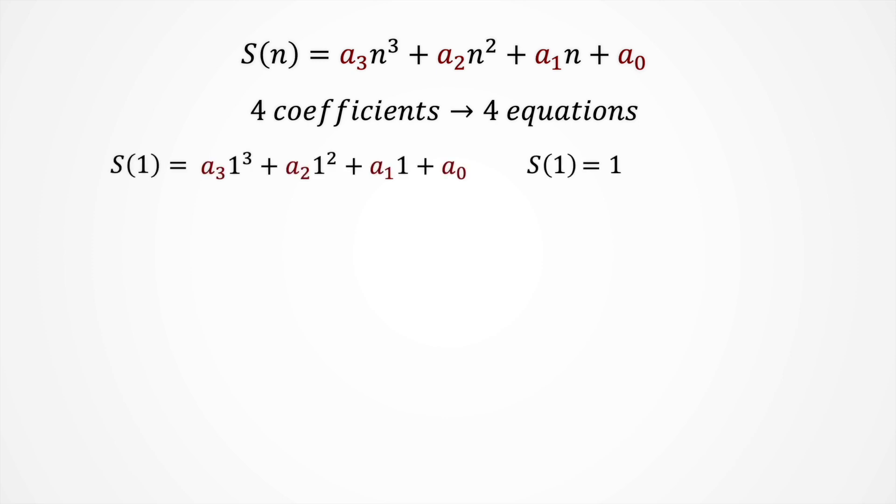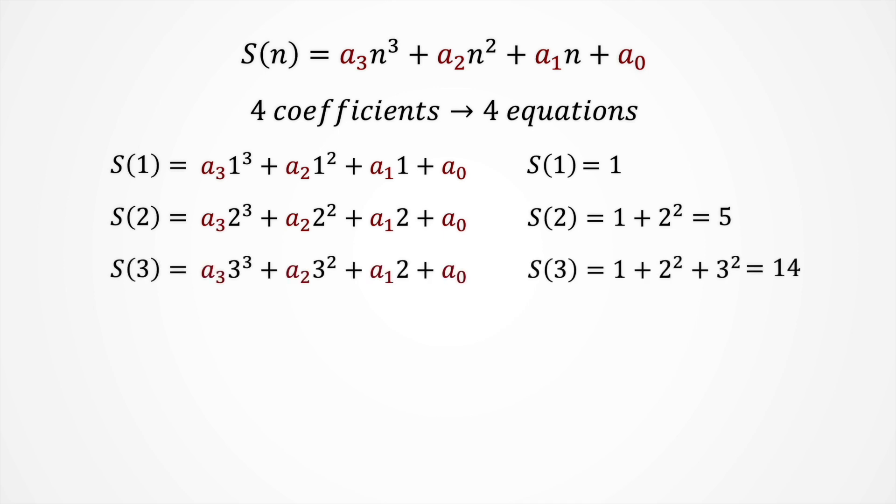Now we can write s of n as a third grade polynomial. The last step is to determine these coefficients, and for that we will need 4 equations. This can be easily obtained by computing some values of s for any n and introducing that n in our polynomial. We will do this for n equals 1, 2, 3 and 4.